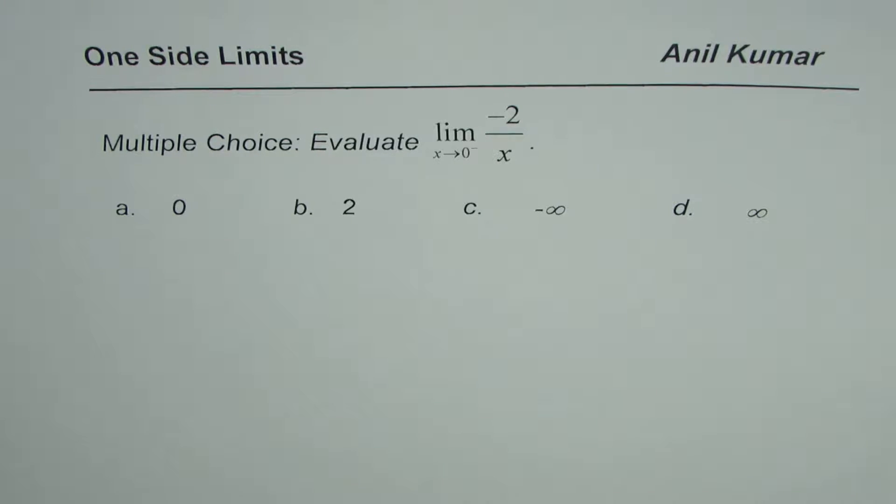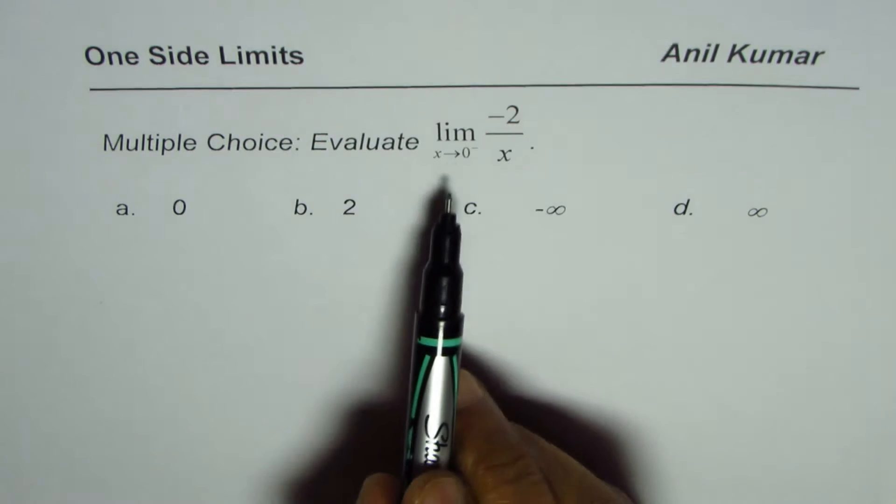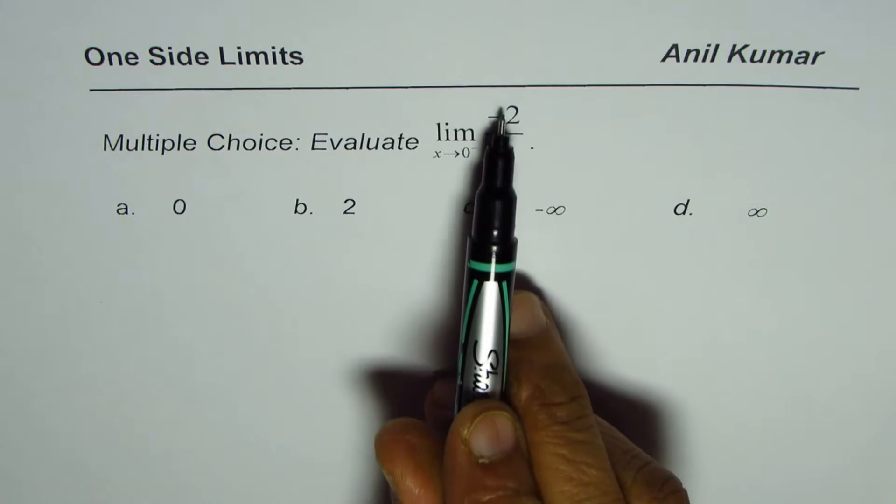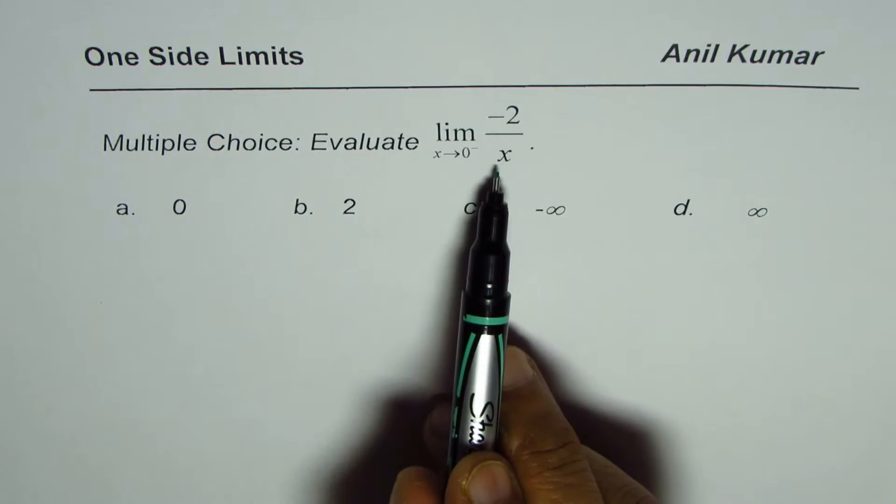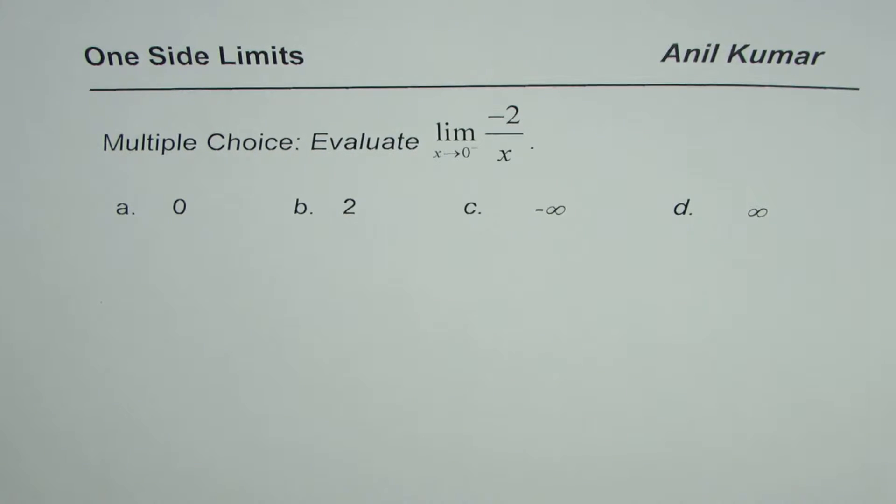You have 4 choices: 0, 2, minus infinity and plus infinity. If you substitute 0 here, we know we will get something over 0 which is infinitely large. So, the answer could be infinity.